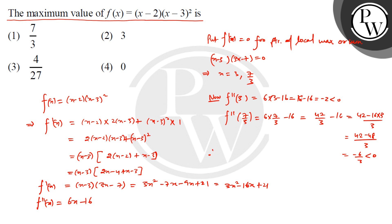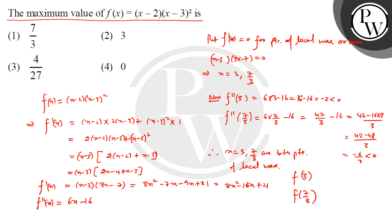Since f''(7/3) is negative, x = 7/3 is a local maximum. So the local maxima occur at x = 3 and x = 7/3. Evaluating the function: f(3) = 0. Next, we evaluate f(7/3).